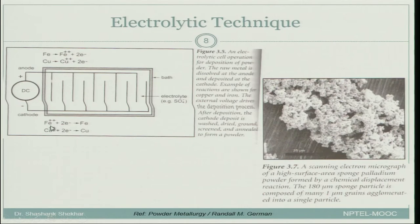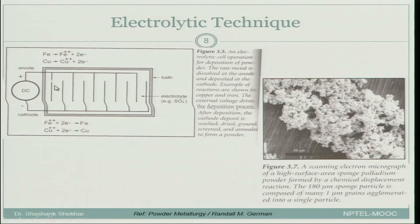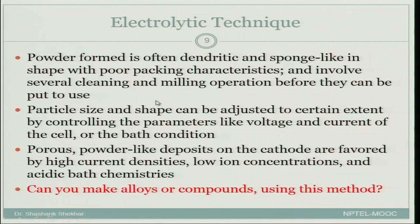Here are examples of the reactions: Fe²⁺ going into Fe, Cu²⁺ going into Cu — these reactions take place at the cathode side, depositing as solid form. On the anode side, bulk metal like iron or copper dissolves into ionic form and travels through the electrolyte to get deposited onto the cathode. The powder formed is often dendritic and sponge-like in shape with poor packing characteristics.